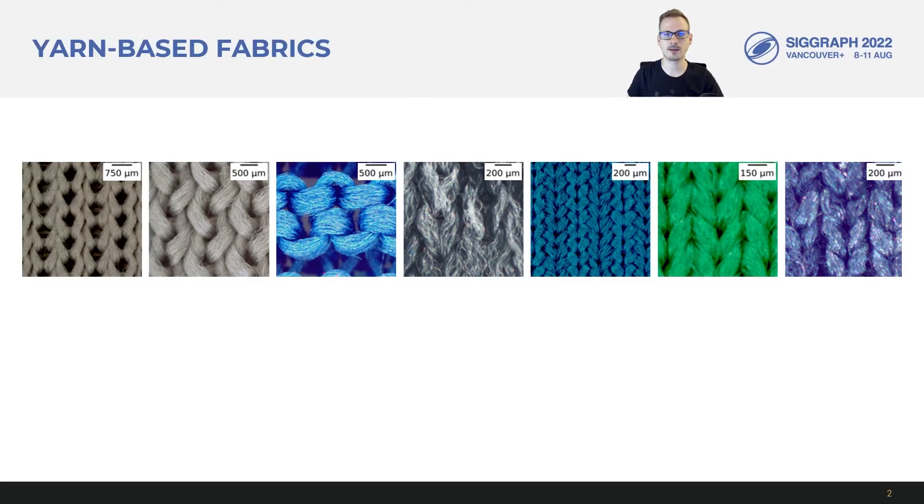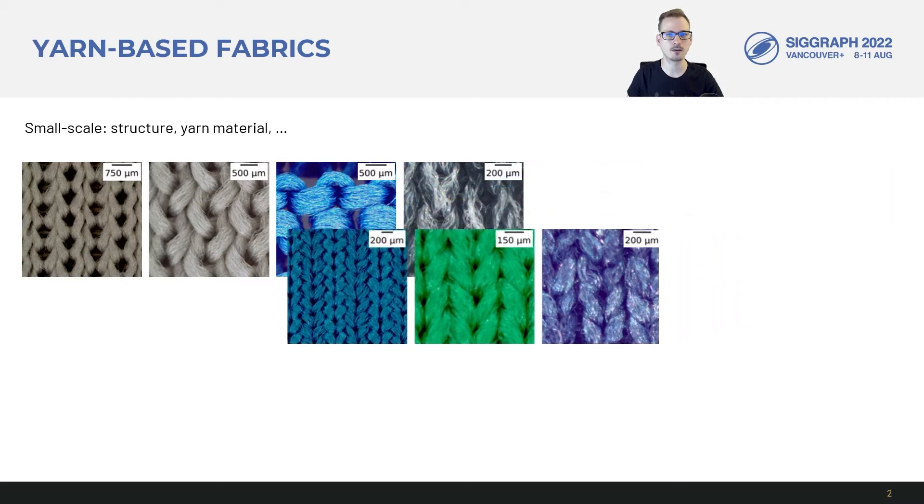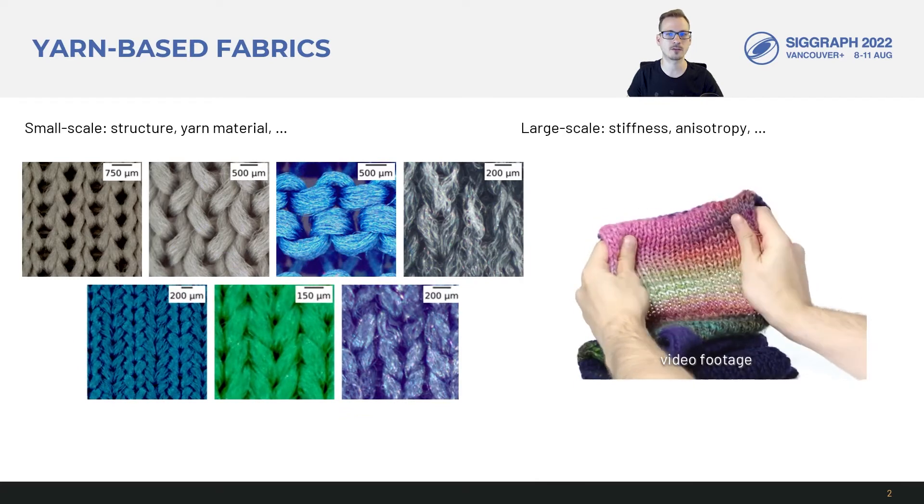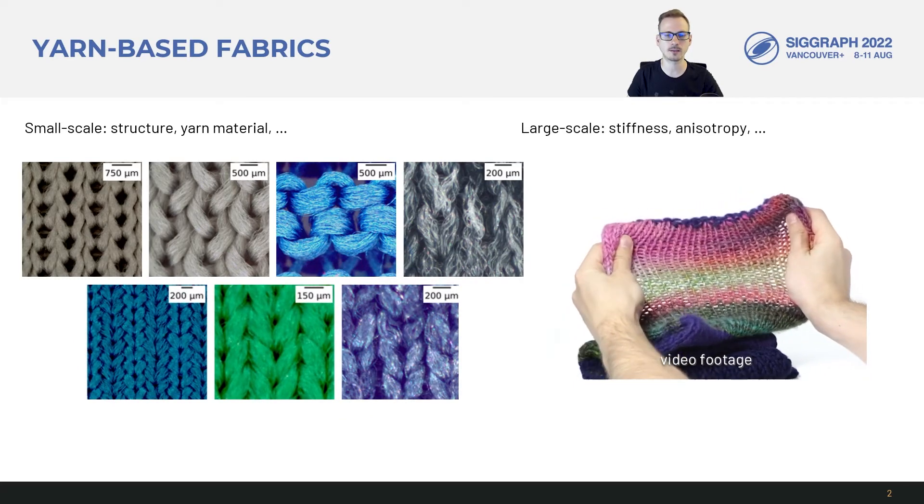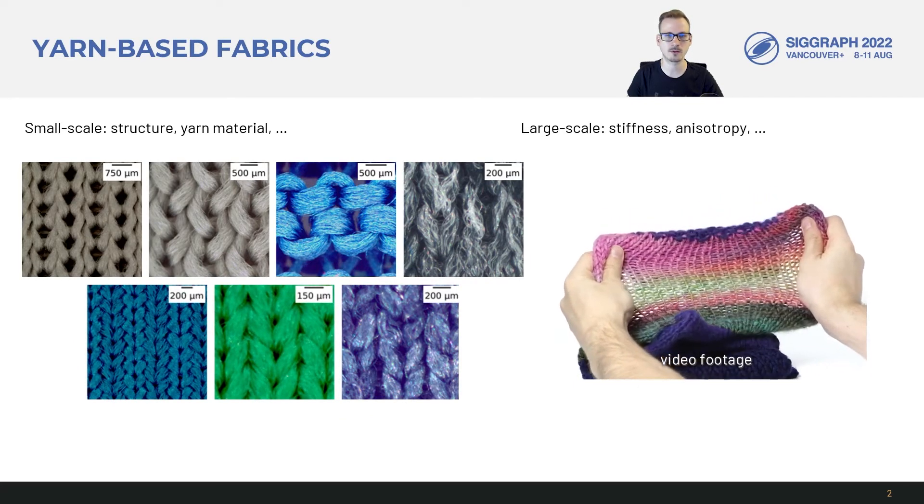Yarn-based fabrics are mechanically complex. The various woven or knitted structures, the yarn material and more can have a dramatic influence on how a fabric behaves. The yarn properties and intricacies of local yarn-yarn interactions non-trivially affect large-scale material properties, resulting in widely different stiffnesses and isotropies and more.